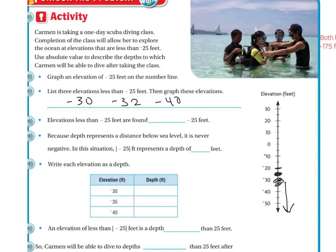Now, elevations less than negative 25 feet are found below negative 25 feet. Because this depth represents a distance that is below sea level, it is never negative. So the absolute value - remember the absolute value of negative 25 represents a depth of 25 feet.